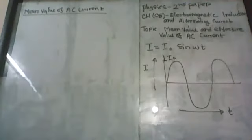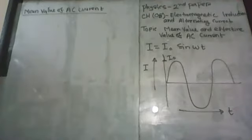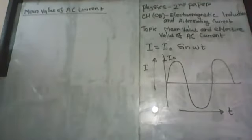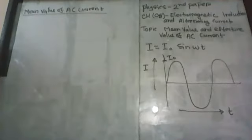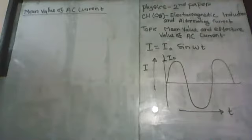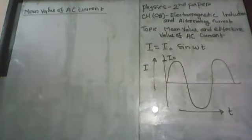You know that the equation of AC current is I = I₀ sin(ωt), where I₀ is the peak value or maximum value of AC current, and ω is the angular frequency or angular velocity of this AC current. If you draw the graph of AC current versus time, then this graph is just like a sinusoidal wave, as drawn at the left side of my board.